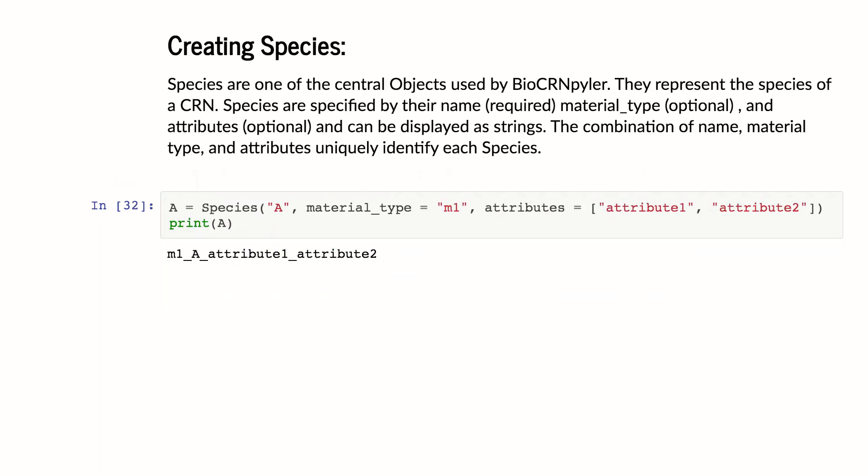So as I've said, chemical reaction networks are a set of species and a set of reactions. So the first thing we have to make are species. And BioCompiler is an object-oriented framework. So when I say we're going to create a species object, I mean we're going to create this variable, which we call A, which is going to be of type species and has certain properties.